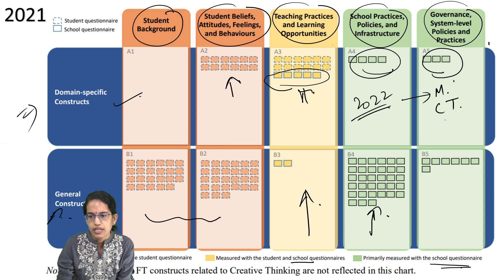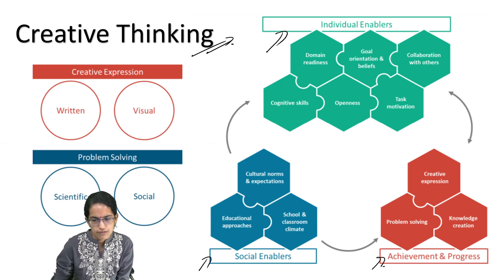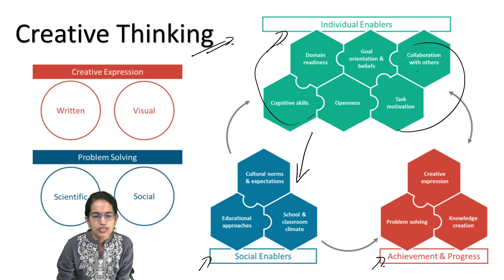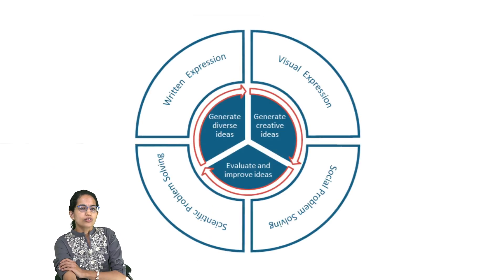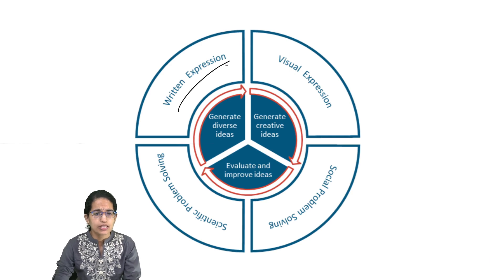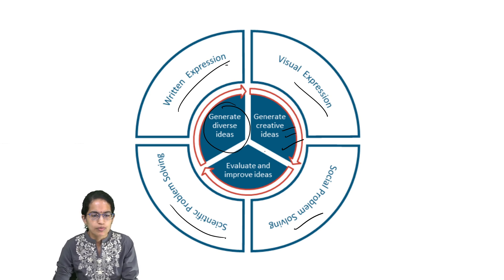In 2022, important components include mathematics, creative thinking, financial literacy, and ICT, along with questionnaires. Under creative thinking, there are individual enablers, social enablers, and achievement. This involves cognitive skills, tasks, collaboration, cultural norms, and creative expression. Creative expression can be written or visual; problem-solving can be scientific or social. Written expression involves diverse ideas, visual expression involves creative ideas, while social and scientific problem-solving helps to evaluate and improve ideas.